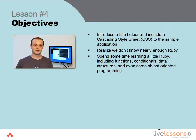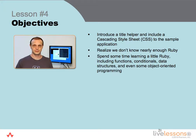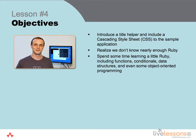Here in lesson 4, Rails-flavored Ruby, we'll start by introducing a Rails helper for our page titles, and we'll also include a cascading style sheet as a foundation for making some design elements for our website. And in the process of doing this, we'll realize that we don't know nearly enough Ruby to continue in this tutorial.